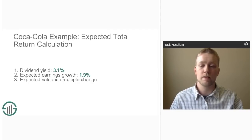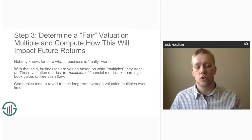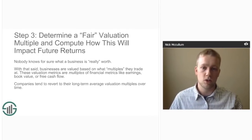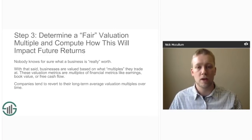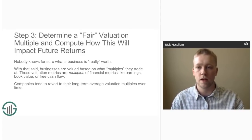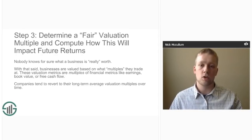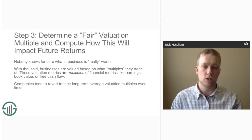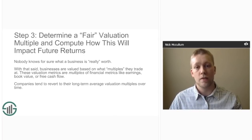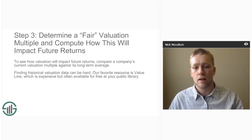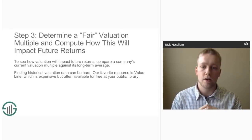The next thing to determine is the expected change in Coca-Cola's valuation multiple. Nobody really knows for sure what Coca-Cola is worth, but businesses are valued based on multiples of things like earnings, book value, or free cash flow. For most businesses, using a price-to-earnings ratio is an appropriate way to determine fair value. Companies tend to revert to their long-term average price-to-earnings ratio over time. If a company trades far above its long-term average P/E, that multiple is likely to contract, decreasing returns. If it trades far below, the ratio is likely to rise, boosting total returns. Here's how we would quantify that: determine the company's current P/E ratio and compare it against its long-term average.